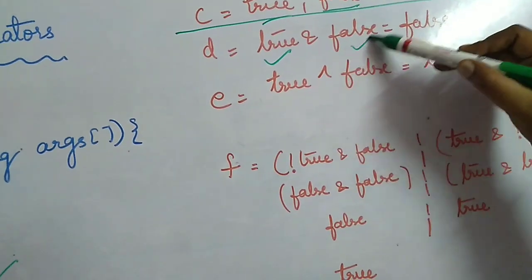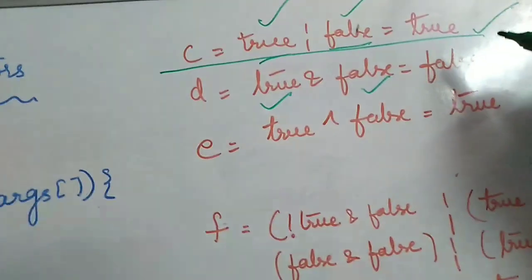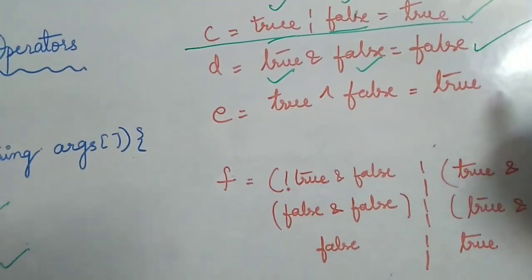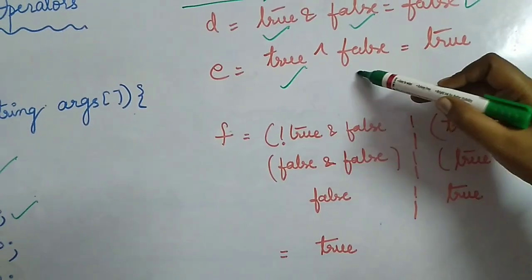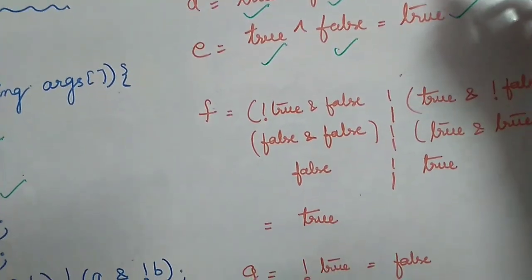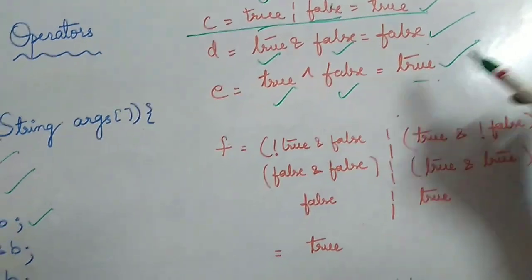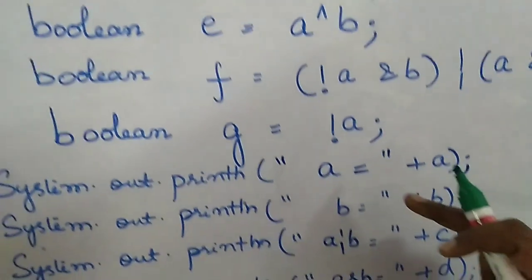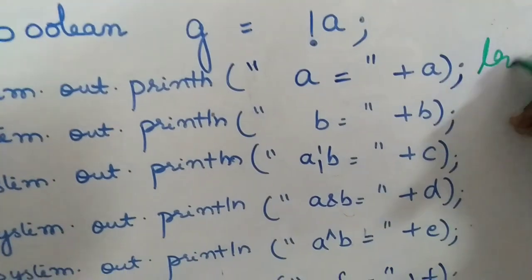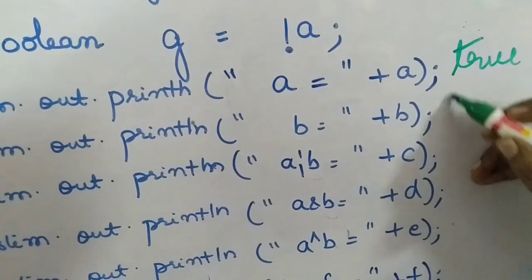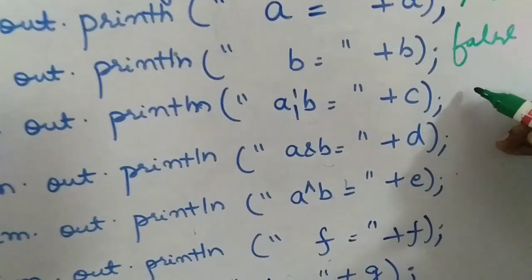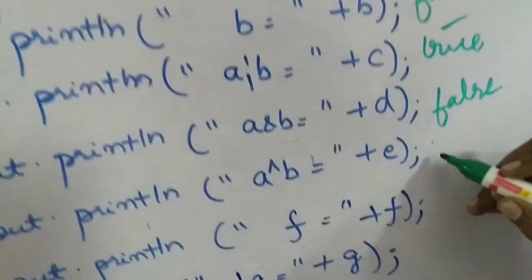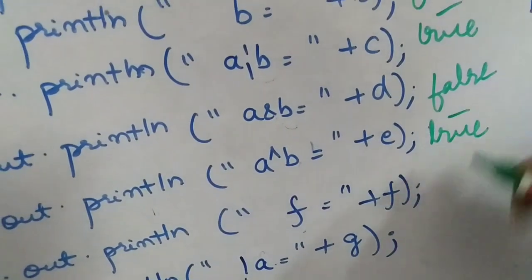For D's value, it is A AND B — A's value is true and B's value is false. Checking the truth table from the previous slide, true AND false is false. Then true XOR false gives true, so the value of E will be true. Printing the values: A is true, B is false, A OR B is true, A AND B is false, A XOR B is true.